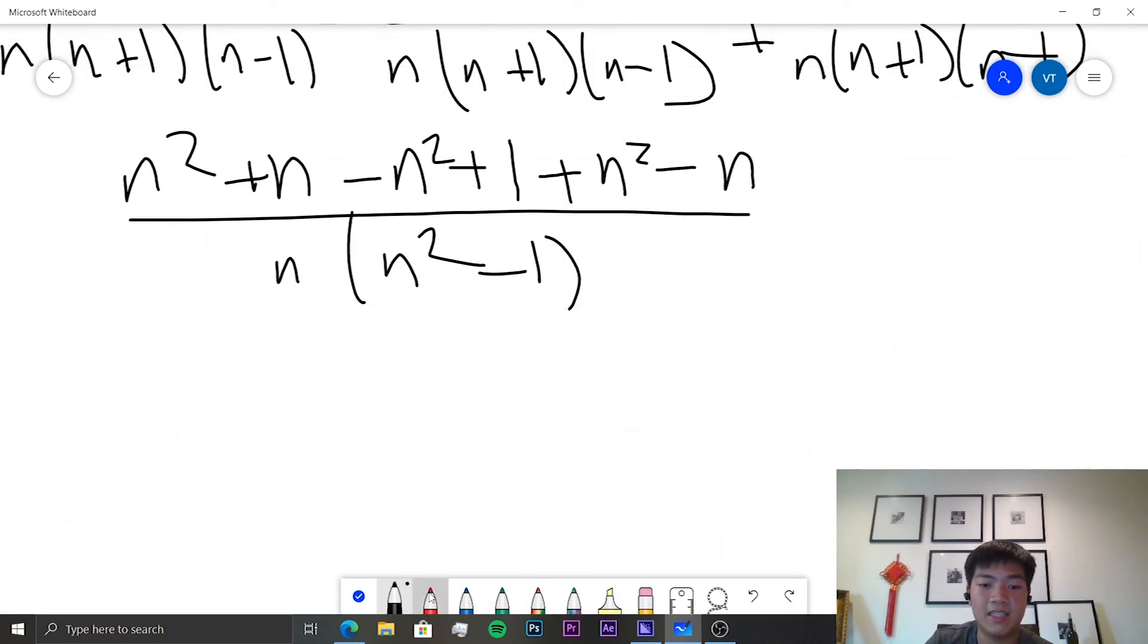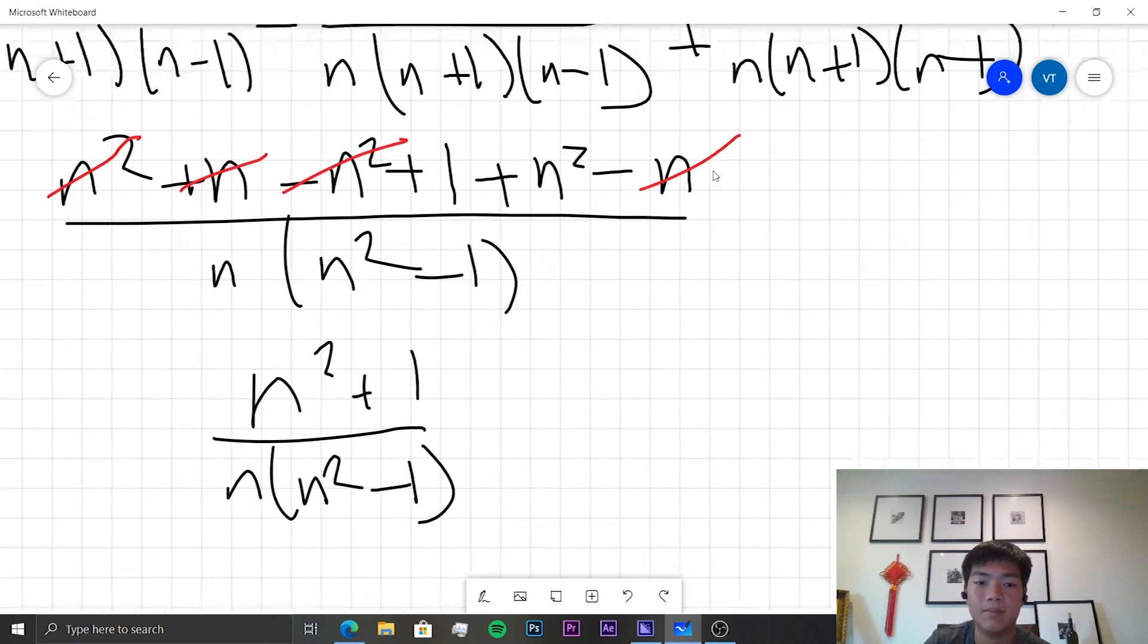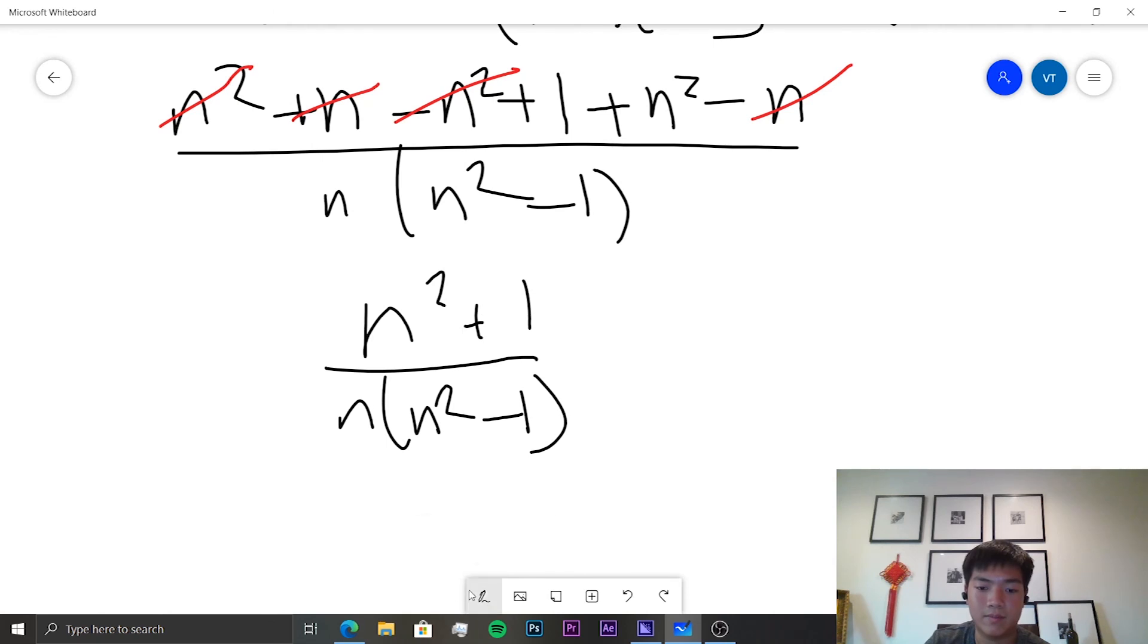What can we cancel out here? We can immediately cancel out those two, and we can cancel out these two, and so we're left with (n²+1)/(n(n²-1)). So is that what we originally needed to prove? Yep, so we've proved it successfully. Let me just put green around this.